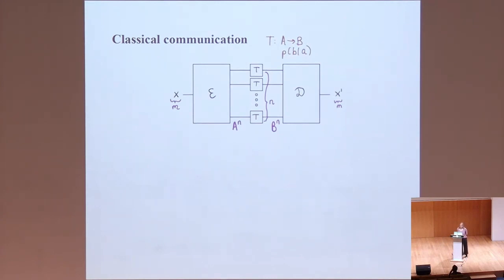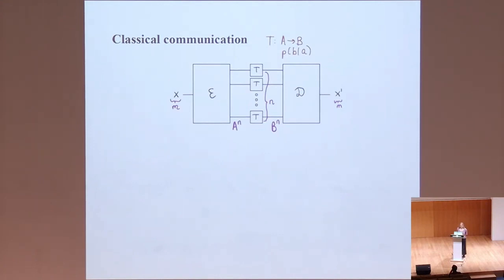This could be a wire with some certain error model that happens during the transmission of data. This is just a classical setup, so I'm encoding a bit string and want to transmit this bit string to the receiver, and some noise corrupts the symbols along the way according to some conditional probability distribution. Naively, if you have a channel that just flips a bit with probability P, you will have a probability P that your outcome bit is corrupted.